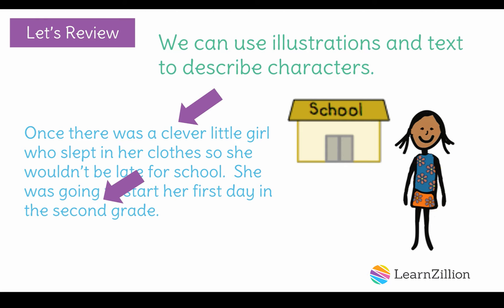I also noticed that she is in the second grade. In the illustration, she is smiling so she must be happy about going to school. She is wearing a blue shirt with orange flowers and an orange skirt with blue flowers. Using all of these details, I could describe this girl as a happy, clever girl on her way to second grade in a blue shirt and orange skirt.